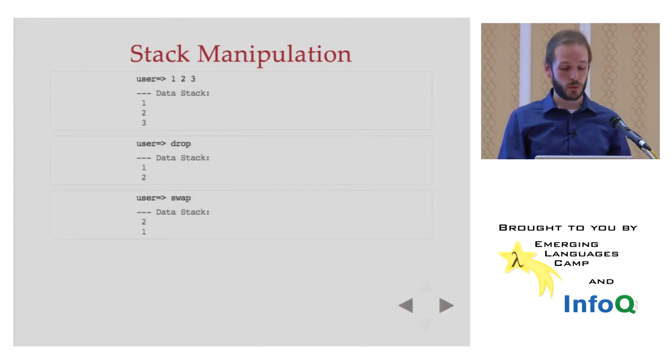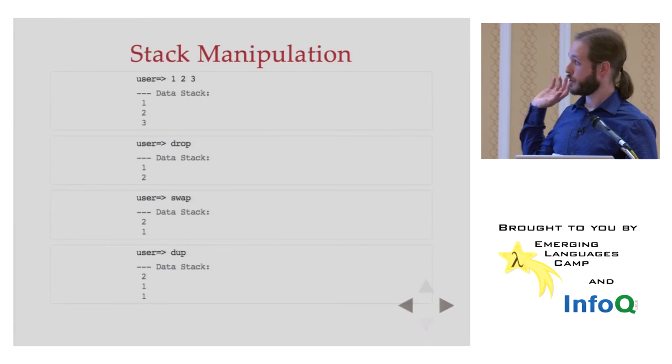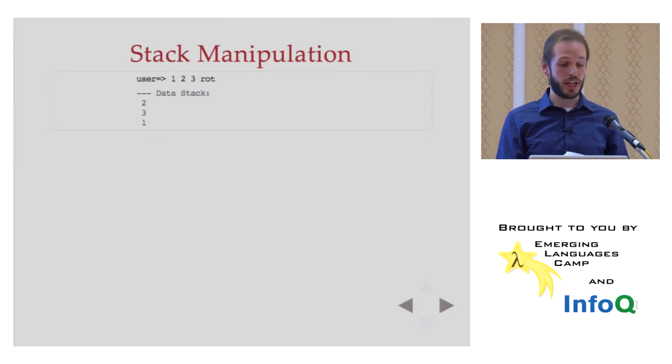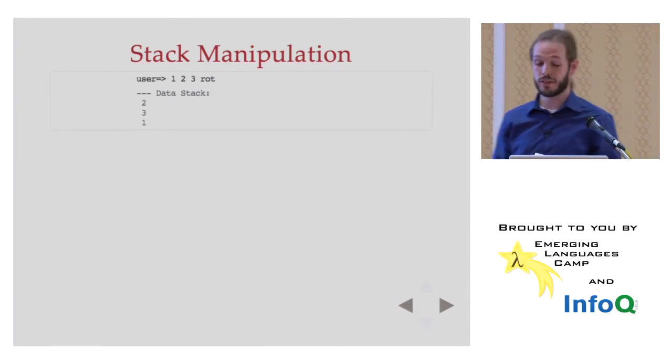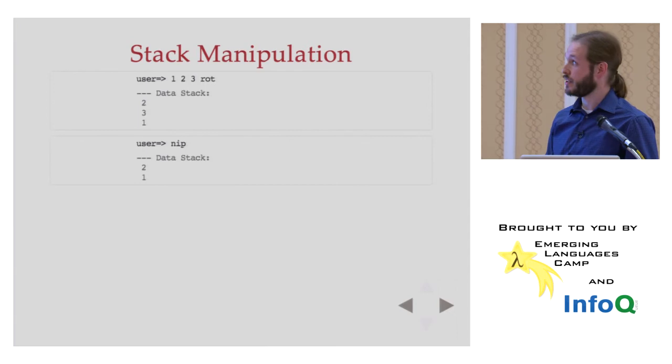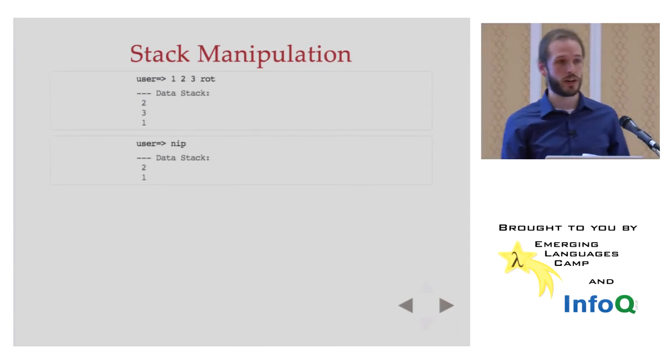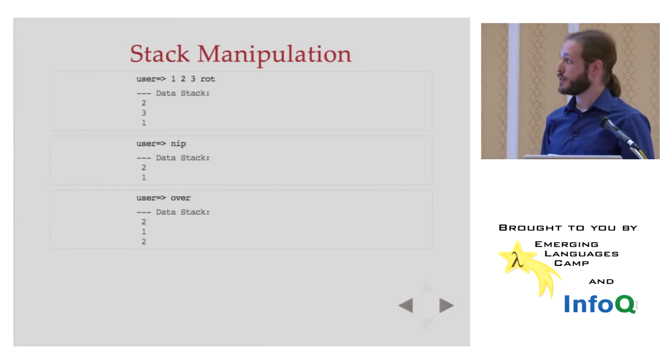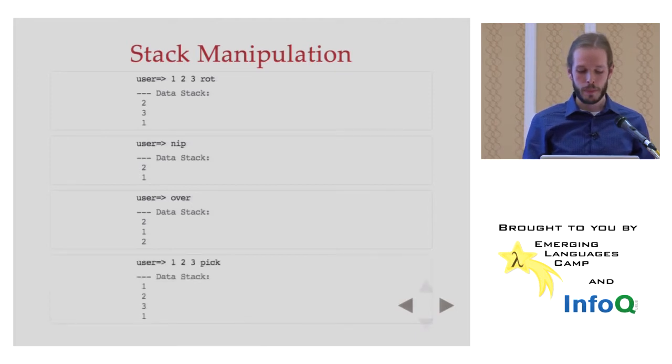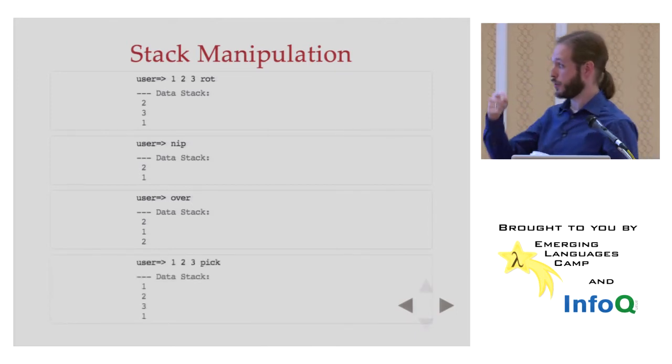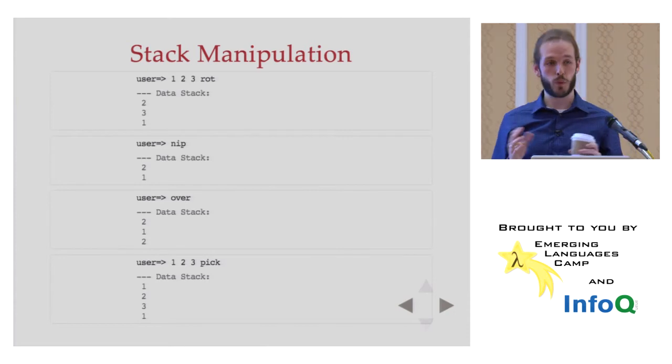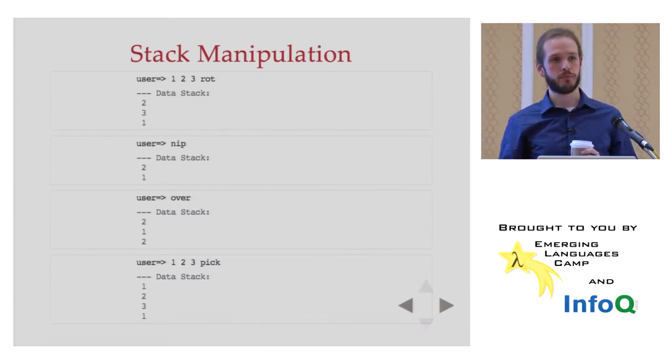So real quick primer on stack manipulation. This has a data stack. One, two, three. Three is on the top of the stack, then two, then one. If I drop the topmost item, I drop that three. I now have one, two. Swap. I can swap the two items on top of the stack, two and one. I can duplicate the topmost item, dupe. Okay. This is, again, super quick primer on basic stack manipulation. I can rotate things. If I start with one, two, three again on the stack and I rotate them, I get the third item put to the front. I can nip in there and remove the second item. So we had one, three, two. I nipped three. It's gone now. I have one, two. I can over items. I can take, in this case, the two, one becomes two, one, two. I took the two and duplicated it, put it on the top. And then finally pick.